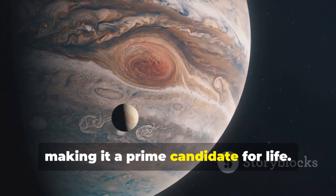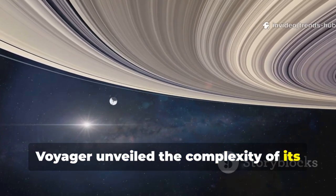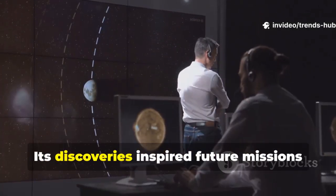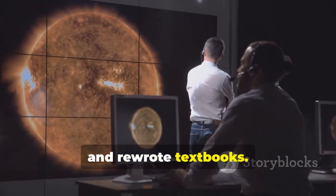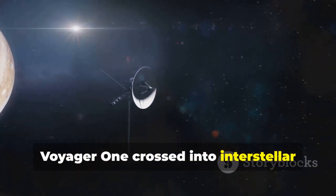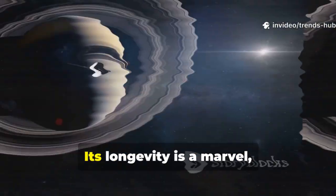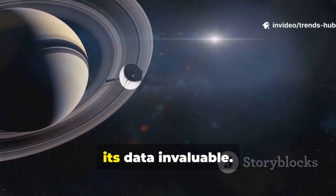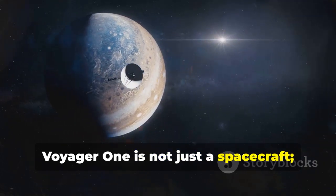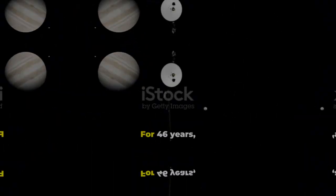Europa's icy surface hinted at a hidden ocean, making it a prime candidate for life. At Saturn, Voyager unveiled the complexity of its rings and the mysteries of Titan's atmosphere. Its discoveries inspired future missions and rewrote textbooks. In 2012, Voyager 1 crossed into interstellar space, the first human-made object to do so. Its longevity is a marvel, its data invaluable. Voyager 1 is not just a spacecraft, it's a legend and a cornerstone of astronomy.